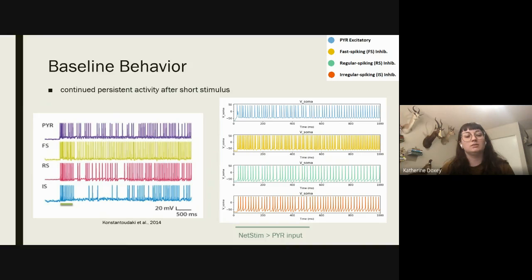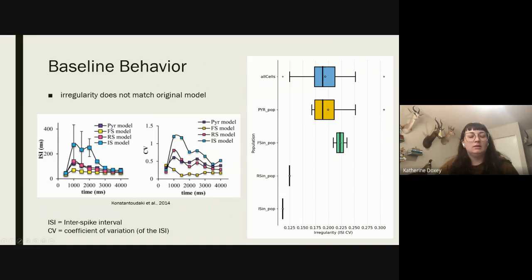So here is the voltage traces of the persistent activity. So on the left is from the paper and on the right is from NetPyNE. And as you can see on the left, there are a lot more gaps between some of the spiking, specifically in the irregular, and even more so in the pyramidal. And as you can see in our run, there aren't really any gaps. And to really drive home the point that the NetPyNE model really does lack the irregularity. So on the right is from output from NetPyNE. And as you can see that the irregular spiking actually is the most regular, and the fast spiking is the most irregular.